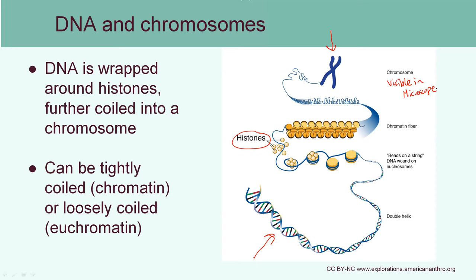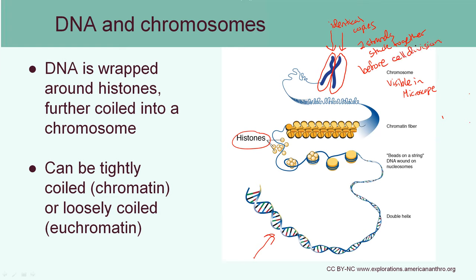Chromosomes often look like an X because the two sides are identical copies that are still stuck together after DNA replication. Those two sides are called sister chromatids. This X shape appears before cell division; after division, the two halves are pulled apart so each cell only gets one half of the X.